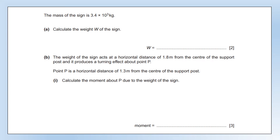The mass of the sign is 3.4 tonnes. Calculate the weight. We need to show our working — our first mark is for showing the equation and substituting the numbers in, and the second mark is for getting the correct number with the correct unit. Weight is a force, so it should be measured in newtons.